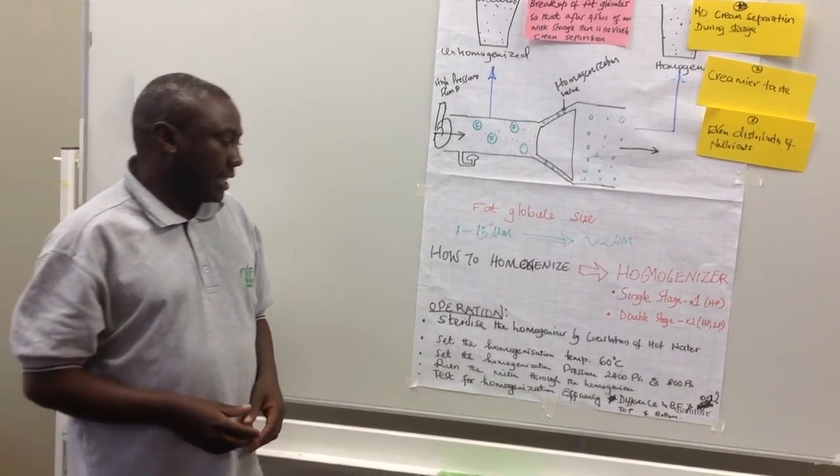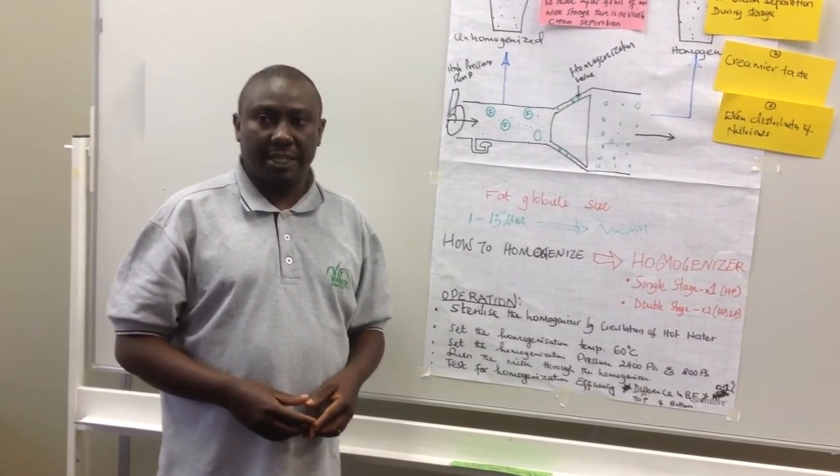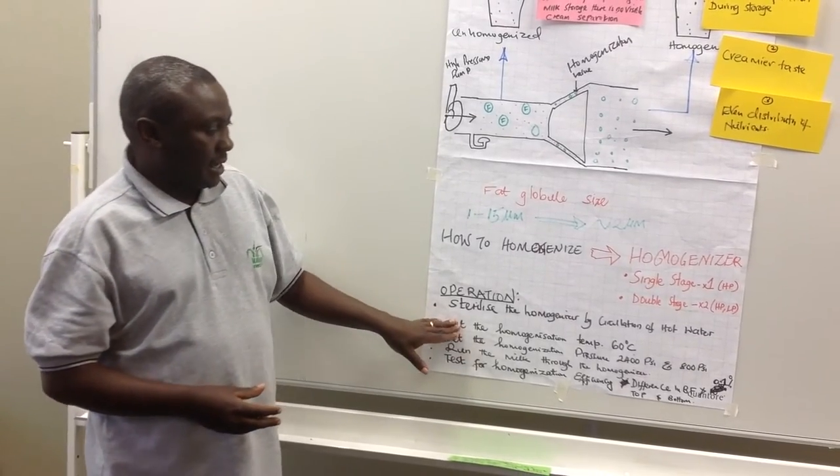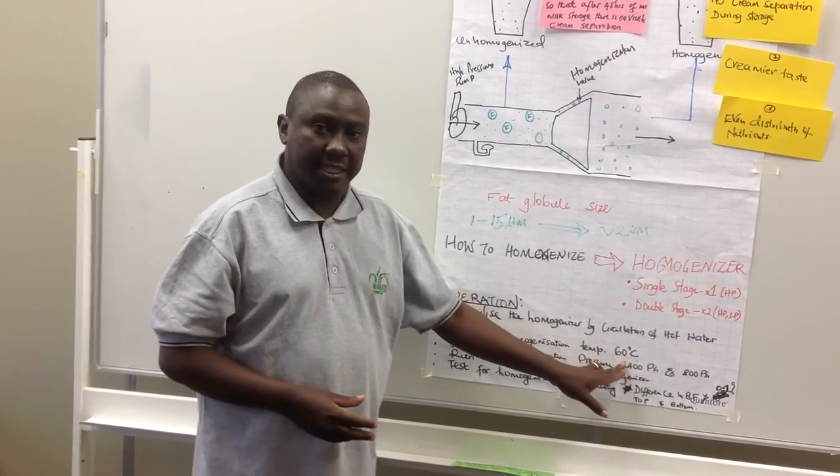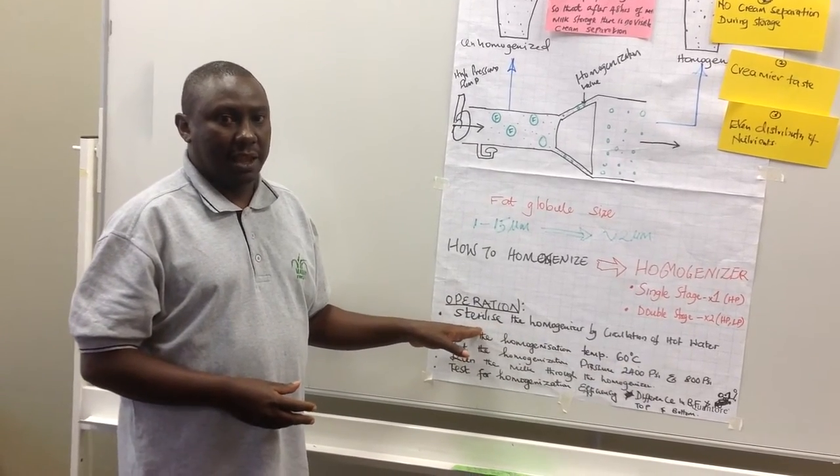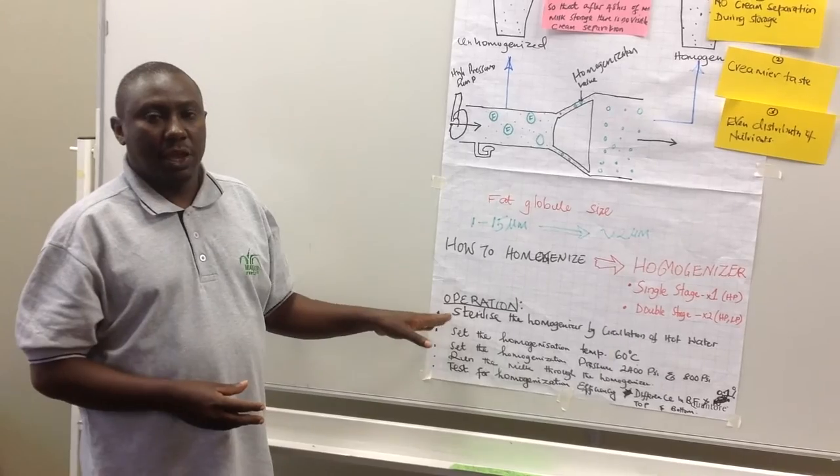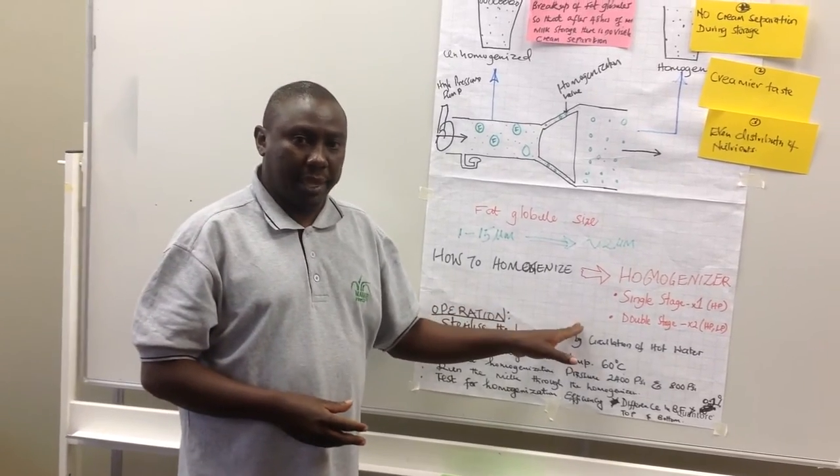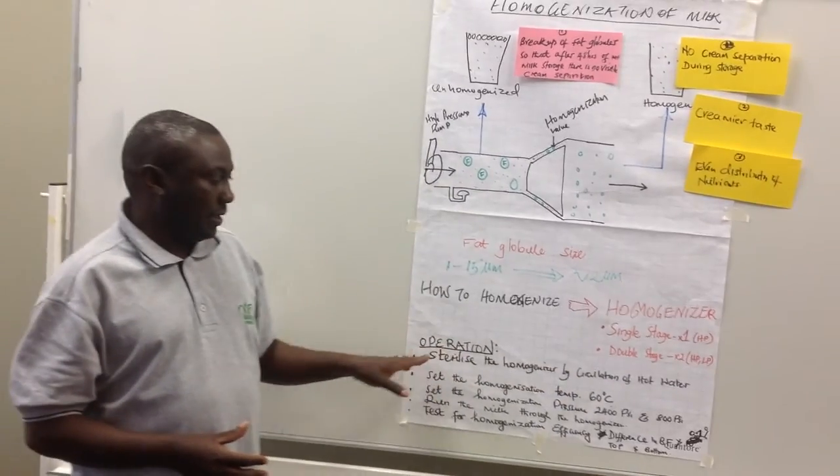The third step is to set the homogenization pressure. We have two pressures. The first is high pressure, which provides effective homogenization, but the resultant milk will have clumping or coming together of the separated fat.